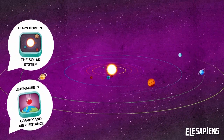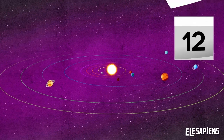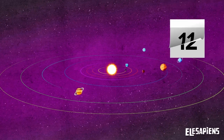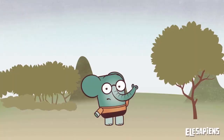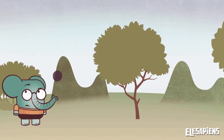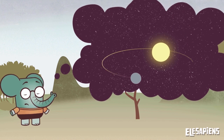The Earth takes 365 days to complete all of its orbit. The Earth takes a whole year to complete one revolution around the sun.